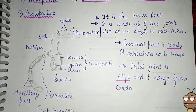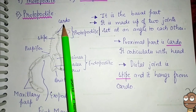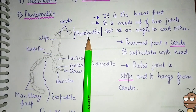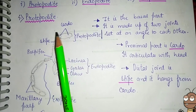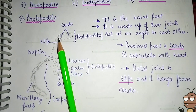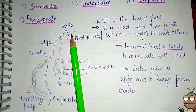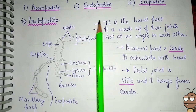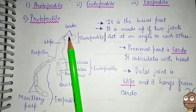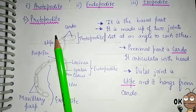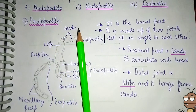The basal part is the protopodite, which consists of the cardo and stipes. The cardo is the proximal part that articulates with the head, while the stipes is the distal joint that hangs from the cardo. Both the cardo and stipes are two joints set at an angle to each other, and together they form the protopodite.